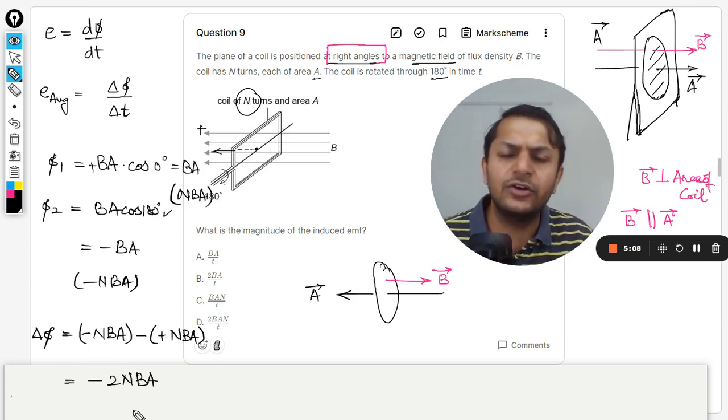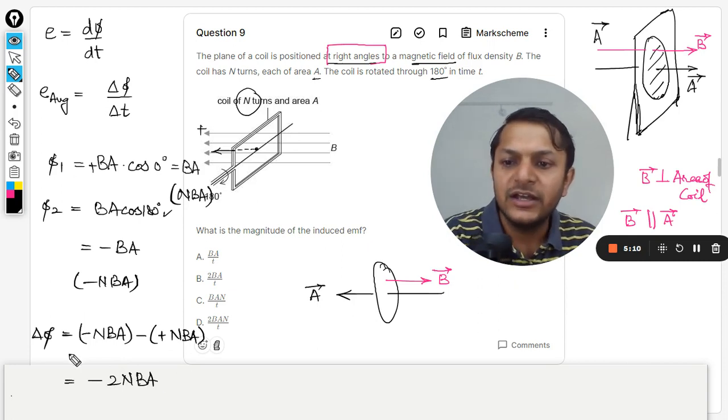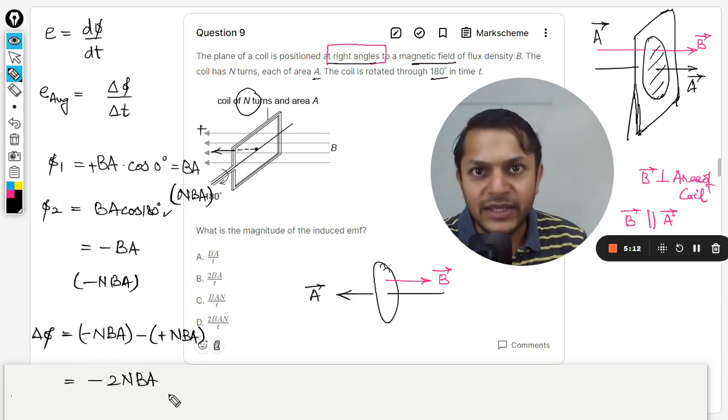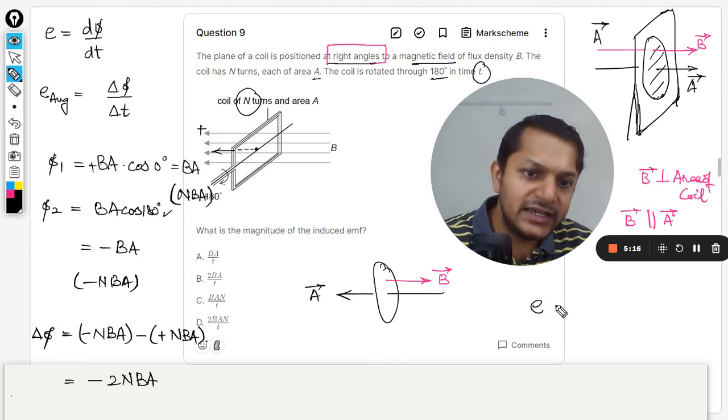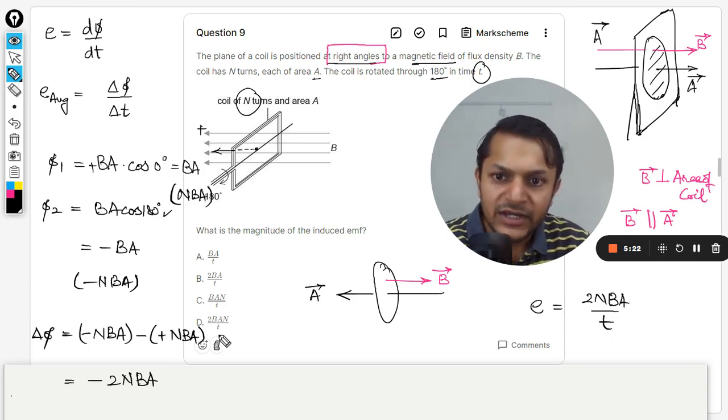Now I want to find the change in flux, so it will be final minus initial. So negative N B A minus positive N B A. So overall it is becoming double the N B A. Definitely we are not concerned with the negative sign, so we can get rid of it later. So the delta phi is twice of N B A. Now what is the time taken? Time taken is t. So clearly the EMF induced is twice of N B A divided by t.